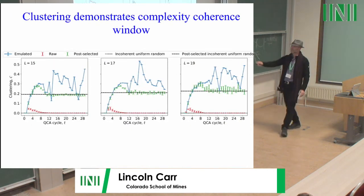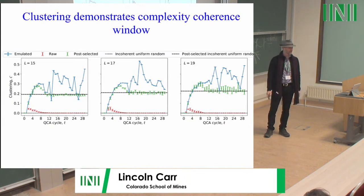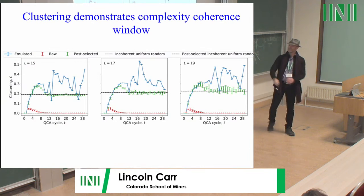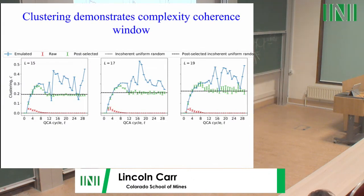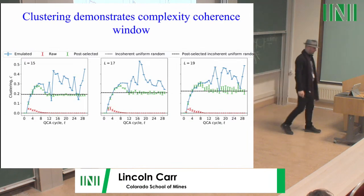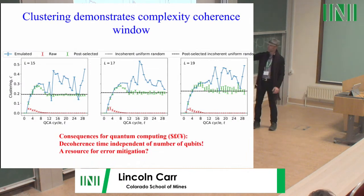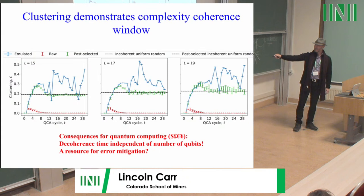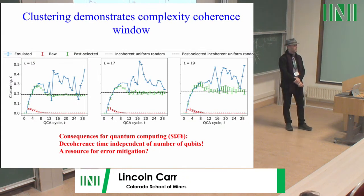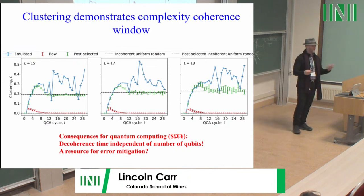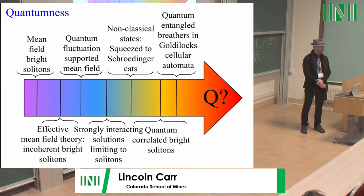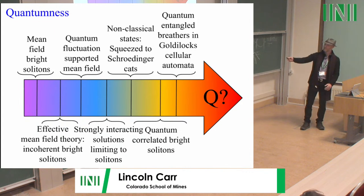Very importantly, if I look at the clustering — the hallmark of complexity, being produced by a solitonic system — and look at the window where I'm above background for different numbers of qubits — 15, 17, and 19 — the point in the circuit where I come back down to background is the same for different system sizes. If the decoherence time is independent of the number of qubits, then we have a resource for error mitigation, maybe not error correction, but error mitigation, which is on the steps toward the holy grail of quantum computing.